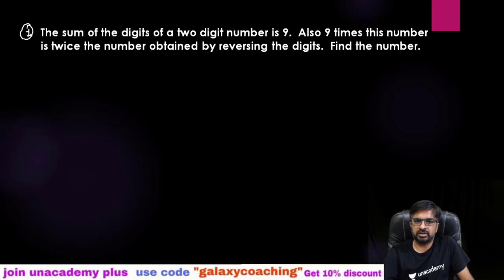Question number one: The sum of the digits of a two digit number is nine. Also, nine times this number is twice the number obtained by reversing the digits. Find the number.